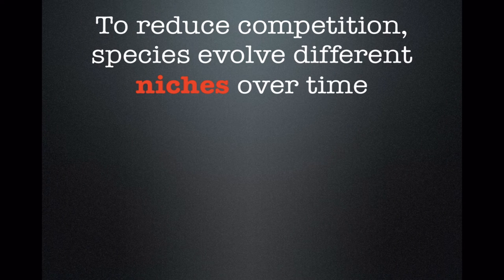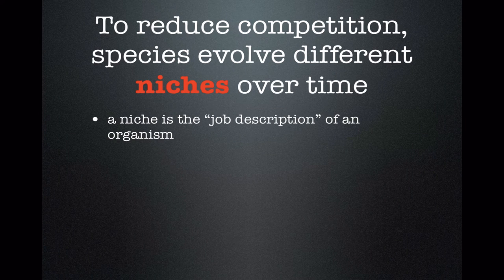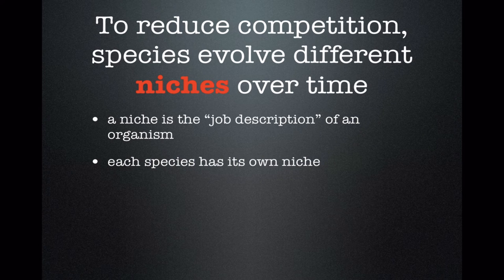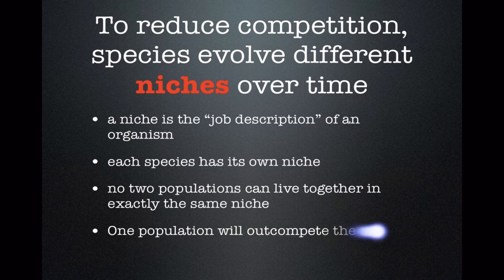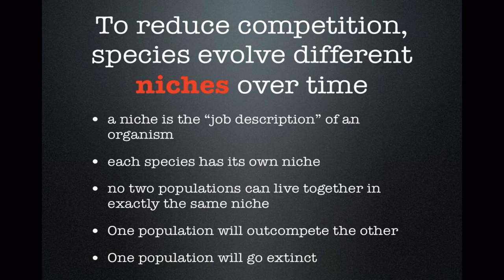To reduce competition, evolution is always adjusting the niches of species. Every species has a niche — you can think of a niche as the job description of an organism. It's everything it needs to do to stay alive: where it needs to live, what it needs to eat, how much water, what temperature, what climate, what seasonal signals it needs to know when to migrate. No two populations, in theory, can live together in exactly the same niche, because if two different species are trying to do the same job, one population will win and the other will most likely go extinct.